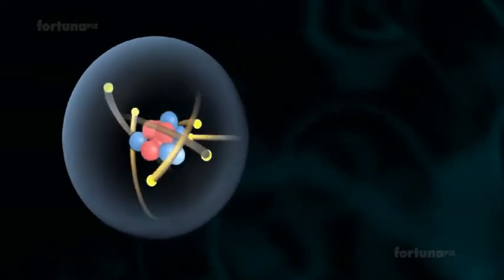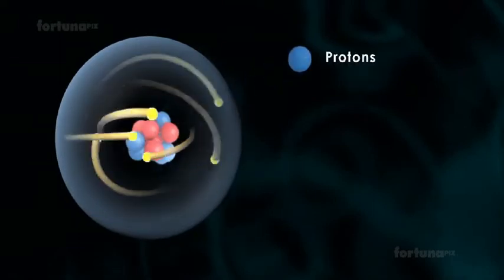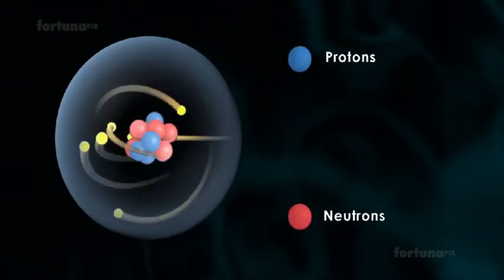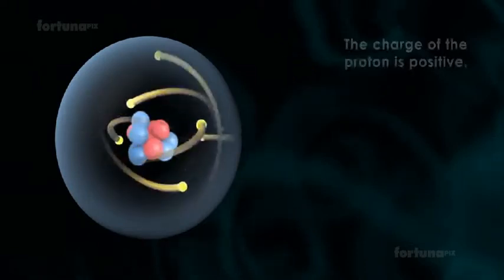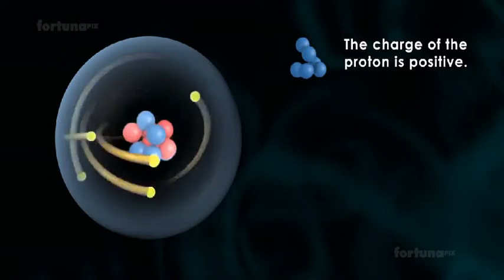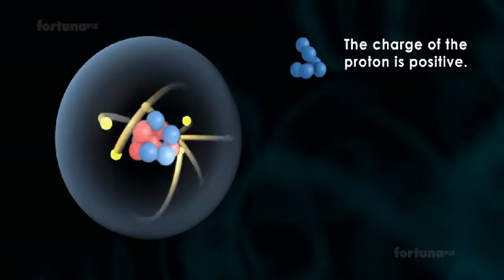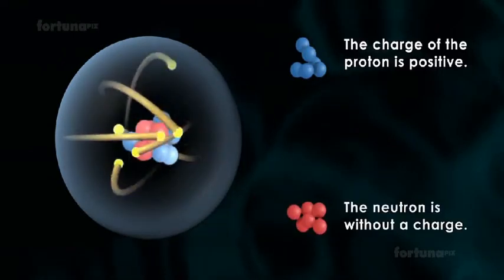The nucleus is composed of protons and neutrons, which are collectively called nucleons. The charge of the proton is positive and the neutron is without a charge.